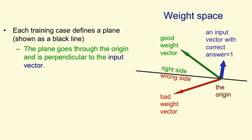We're going to consider a training case in which the correct answer is 1. And for that kind of training case, the weight vector needs to be on the correct side of the hyperplane in order to get the answer right. It needs to be on the same side of the hyperplane as the direction in which the training vector points. For any weight vector, like the green one, that's on that side of the hyperplane, the angle with the input vector will be less than 90 degrees. So the scalar product of the input vector with the weight vector will be positive.